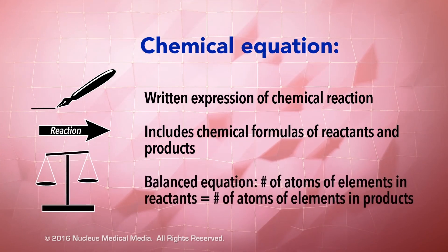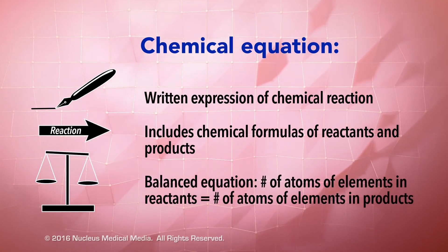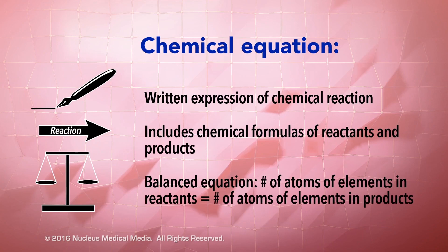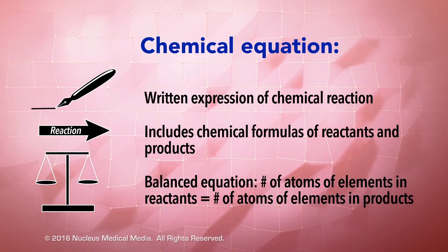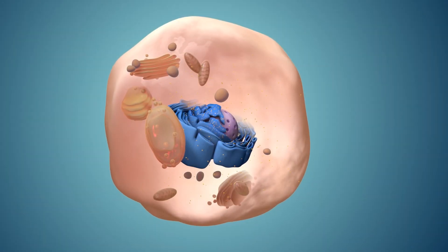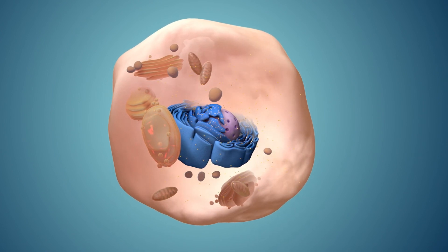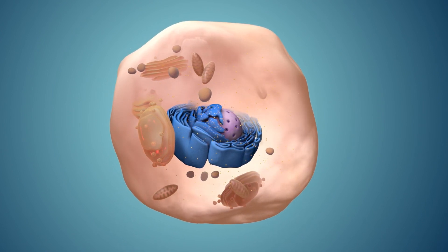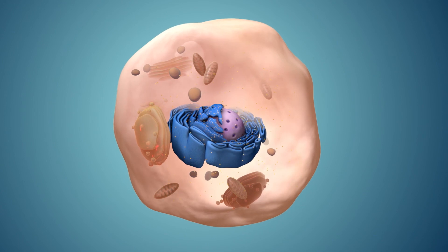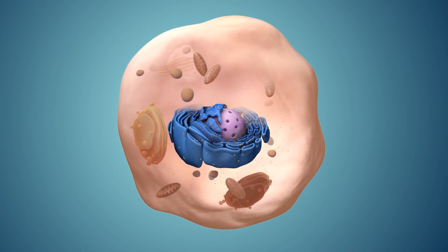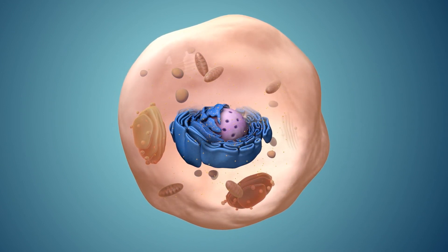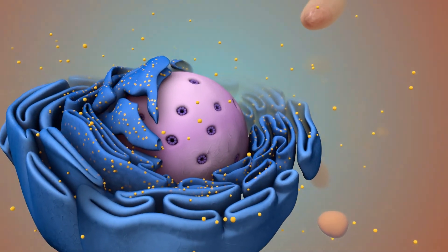In a balanced chemical equation, the number of atoms of each element in the reactants equals those in the products.